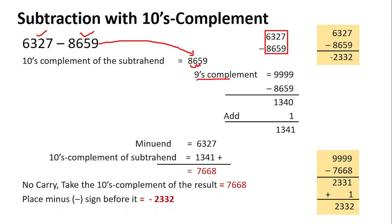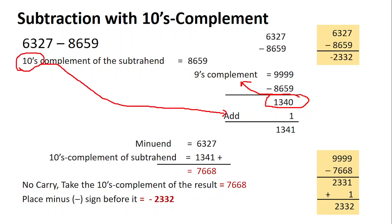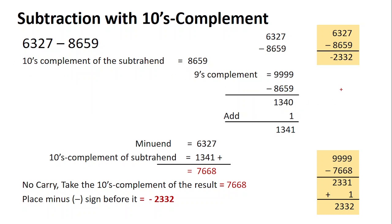To get the nines complement, count the digits: one two three four. Write four nines, then write the subtrahend as it is. Subtract: nine minus nine is zero, nine minus five is four, nine minus six is three, nine minus eight is one. This is the nines complement. To get the tens complement, add one to the nines complement: 1340 plus one is 1341.